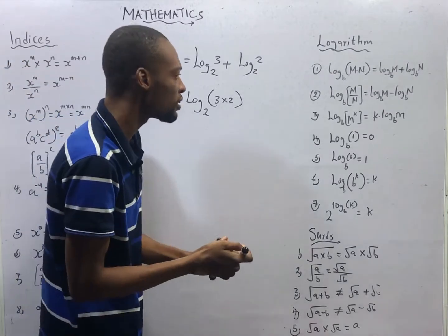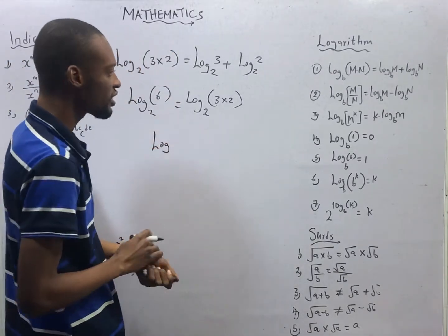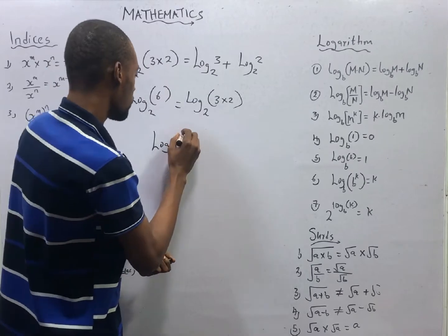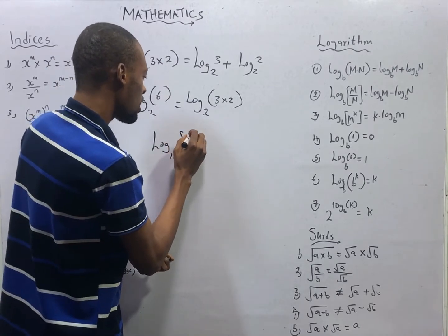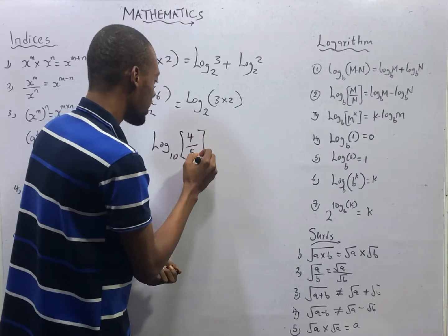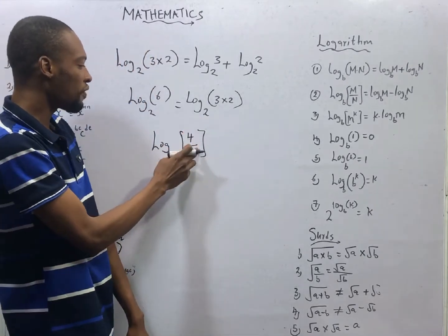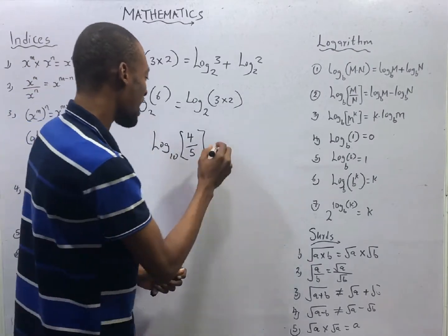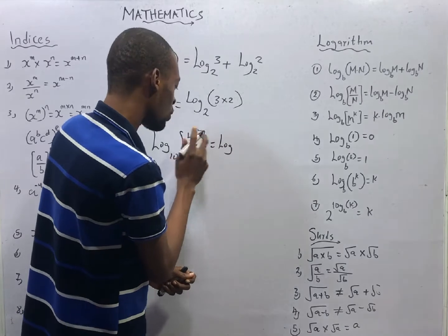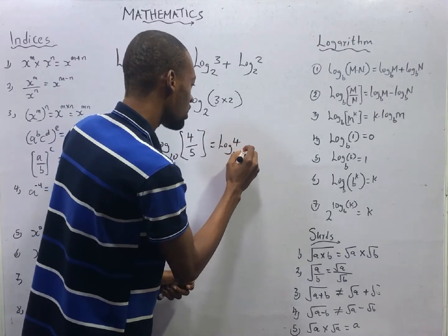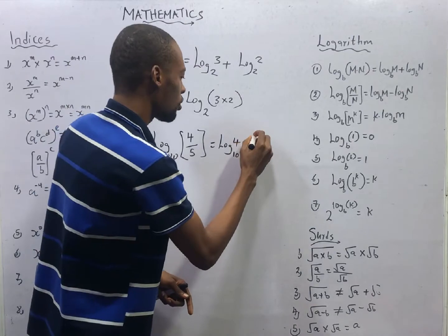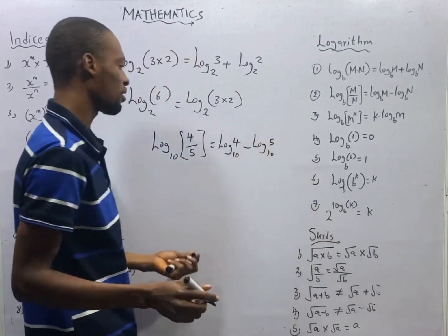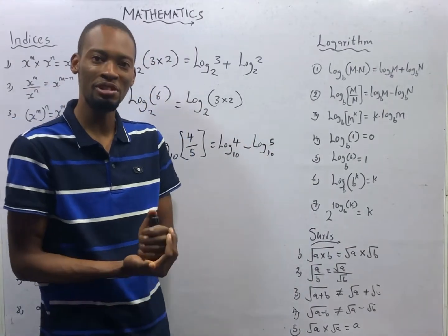The second law of logarithms says that if you have log of m over n to a base — let's say the base is 10, let m be 4 and n be 5 — since you have division and you have a log to a base, the law says this is the same thing as log 4 base 10 minus log 5 base 10. That is the second law: the division law.